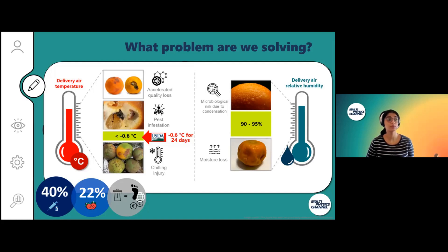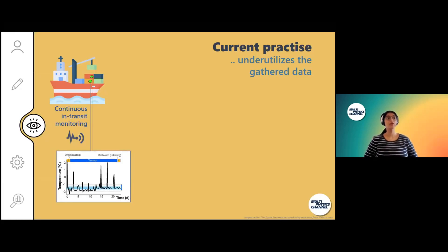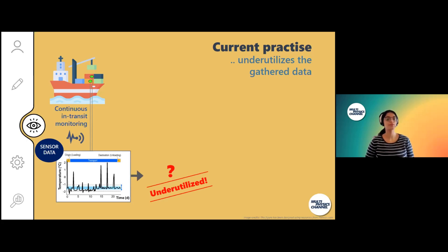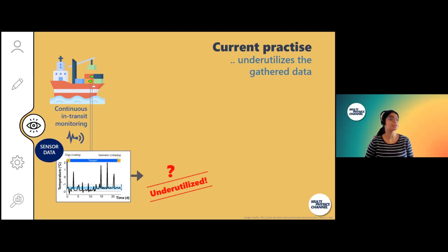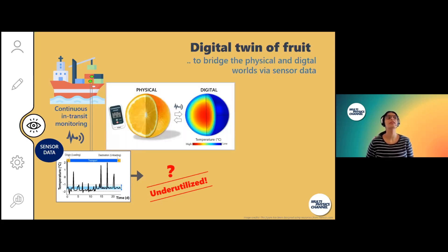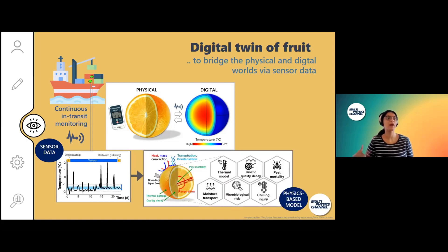So what is the current practice in these supply chains? They typically gather a lot of data from continuous monitoring of temperatures and so on, but what really happens to all the sensor data? At the moment, it is largely underutilized — it sort of reaches a dead end. This is the whole idea of a digital twin: to utilize this sensor data to its fullest potential by bridging the physical and digital worlds.